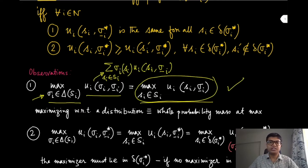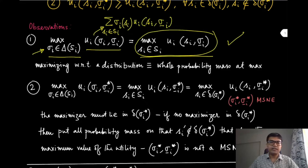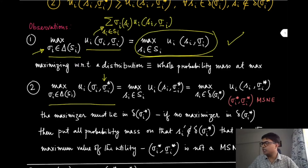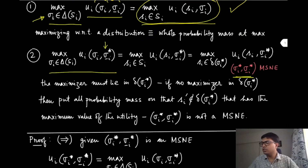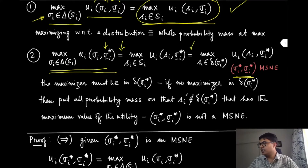The second observation considers the same utility expression but with the other players using σ₋ᵢ*, the Nash equilibrium strategy. Since (σᵢ*, σ₋ᵢ*) is a mixed strategy Nash equilibrium, this utility is maximized by σᵢ*. Using the first observation, this maximum equals the maximum over the support of σᵢ*.